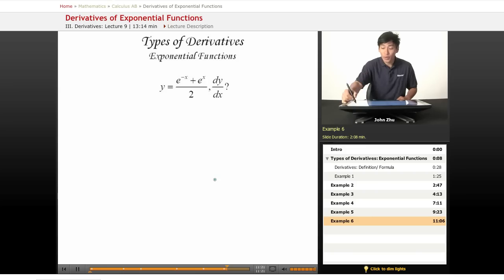but we can also recognize that y simply equals 1 half times e to the negative x plus e to the x, which makes this whole thing a lot simpler because 1 half is just a constant, so we don't have to really think about that in terms of derivatives.